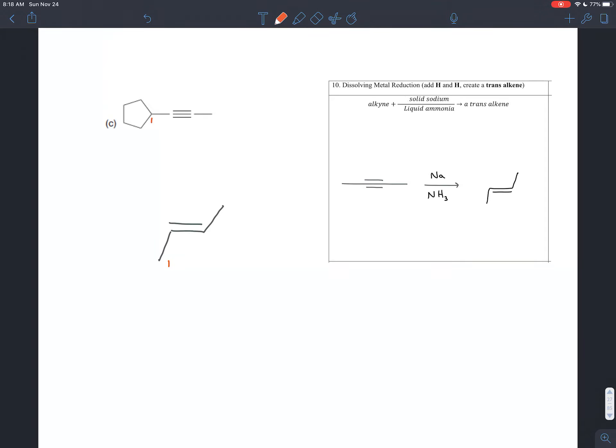On the other side, this carbon, this first carbon attached to what was the triple bond, should be a carbon in a five-membered ring. So we can redraw that five-membered ring. And so there you have it. That is your trans alkene.